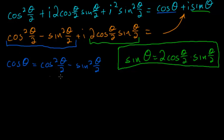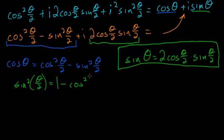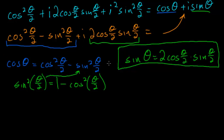Now I just have to clean up the real-part equation. Recall that the sine squared of any angle — in this case theta over 2 — is equal to 1 minus the cosine squared of that angle. This just comes from the Pythagorean identity, that the sine squared of some angle plus the cosine squared of that angle is equal to 1. So I can substitute this value in so that I have an equation with only cosines in it.